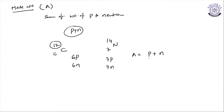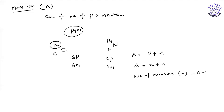Since the number of protons equals the atomic number Z, we can write A equals Z plus N, where N is the number of neutrons. Therefore, the number of neutrons N equals A minus Z.